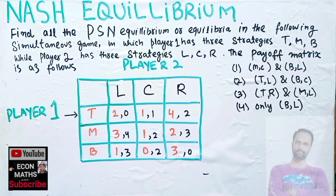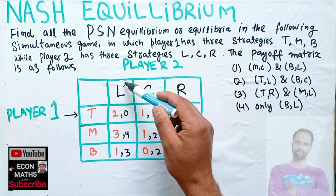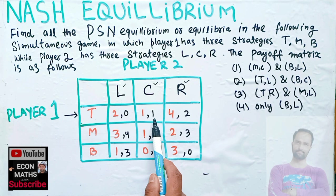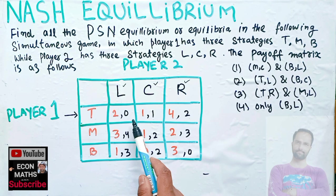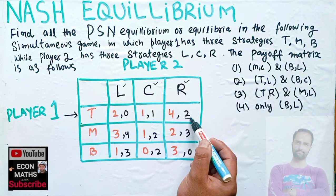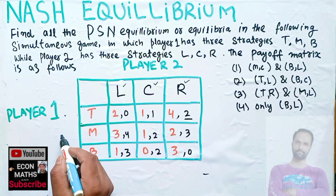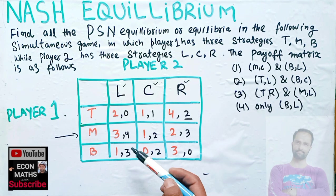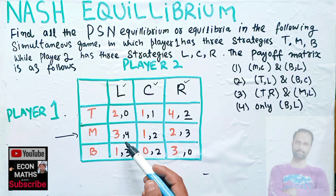If player one plays T, player two has three options: L, C, or R. The corresponding payoffs for player two are 0, 1, or 2. Since players are rational, player two will choose the highest payoff, which is 2, so we underline that. Now if player one plays strategy M, player two's payoffs are 4, 2, or 3. The greatest is 4, so we underline that.